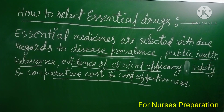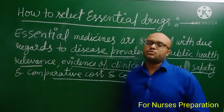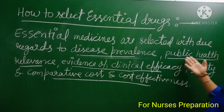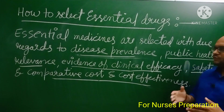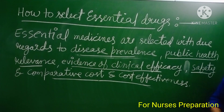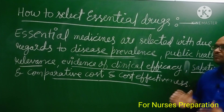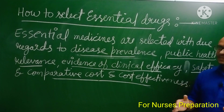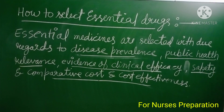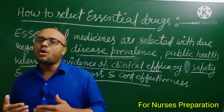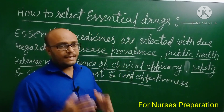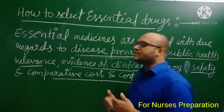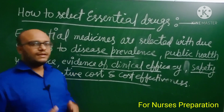Second point is public health relevance — all the drugs that come under the list of essential drugs should be linked with and relevant to public health. Third point is evidence of clinical efficacy — most effective drugs should be included. Fourth point is safety — we include all the drugs that have less complications or less adverse effects.